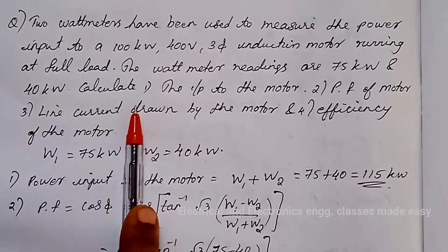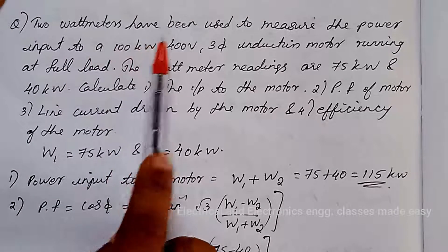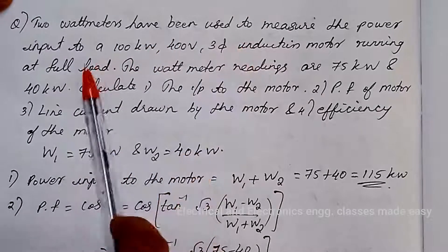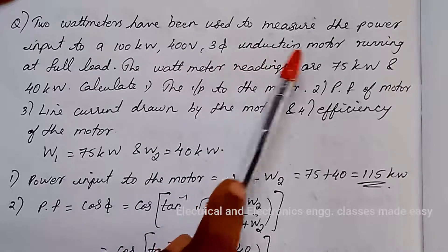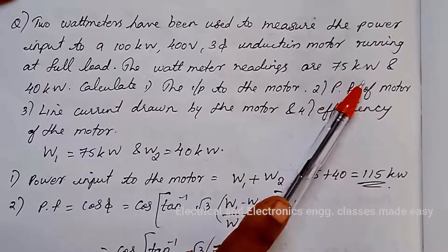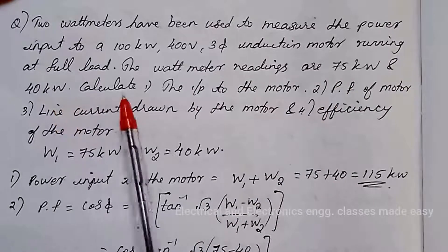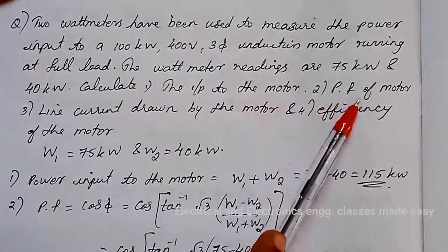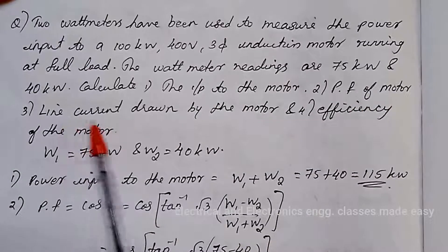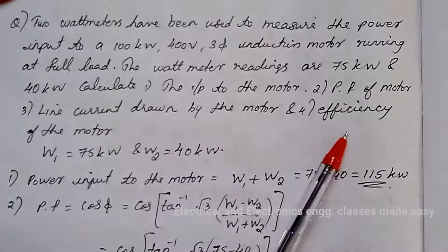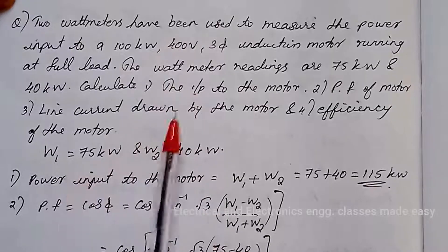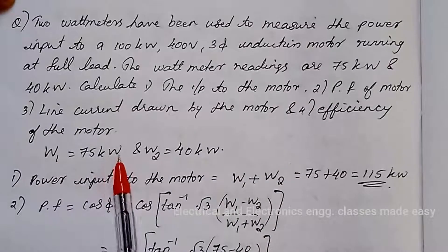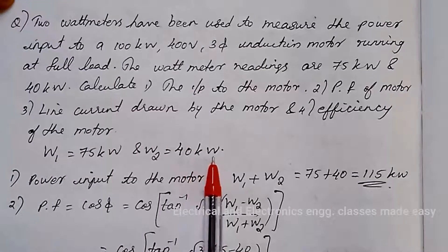Let us go through another problem. Two watt meters have been used to measure the power input to a 100 kilowatt, 400 volt three-phase induction motor running at full load. The watt meter readings are 75 kilowatt and 40 kilowatt. Calculate the input to the motor, the power factor, the line current drawn by the motor, and the efficiency of the motor. Given: W1 = 75 kW, W2 = 40 kW, output = 100 kW.